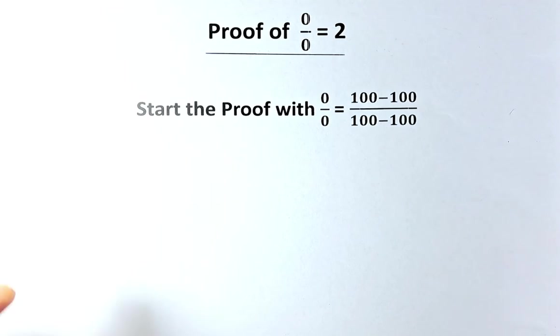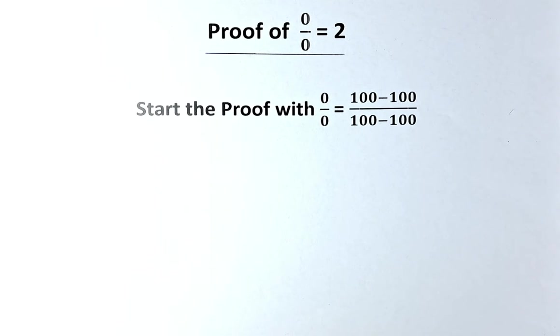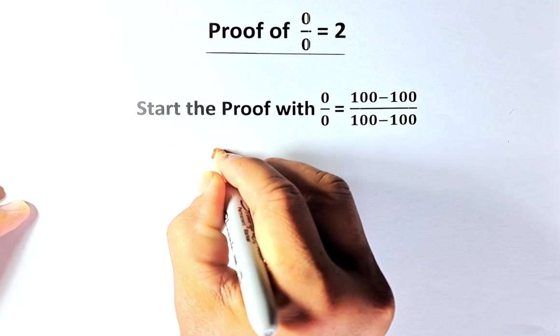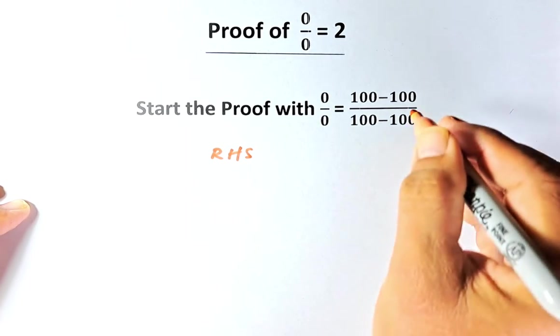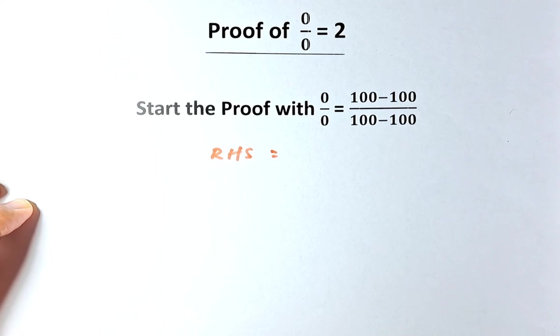The first thing we're going to do is we are going to leave 0 divided by 0 as it is. We're going to simplify the expression on the right-hand side. So right-hand side, we're going to put RHS, which is the right-hand side. We're going to simplify that: 100 minus 100 divided by 100 minus 100.